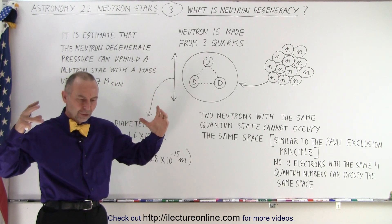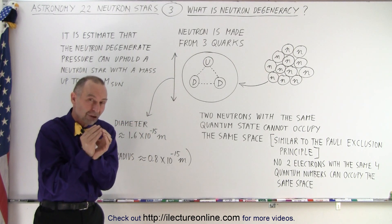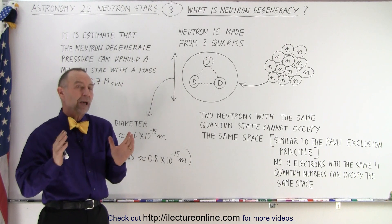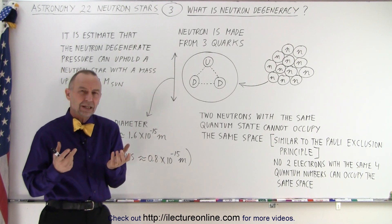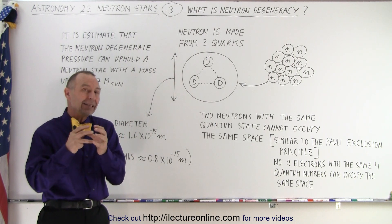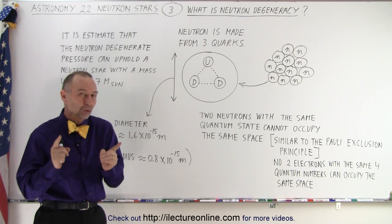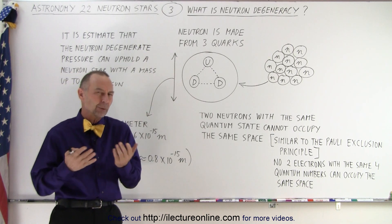When you bring neutrons too close together, when you try to push them too close together, there's some pressure that builds up trying to push back, and that's what we call neutron degeneracy. Essentially, the problem is that we can't have two neutrons occupying the same space, just like you can't have two electrons occupying the same space.